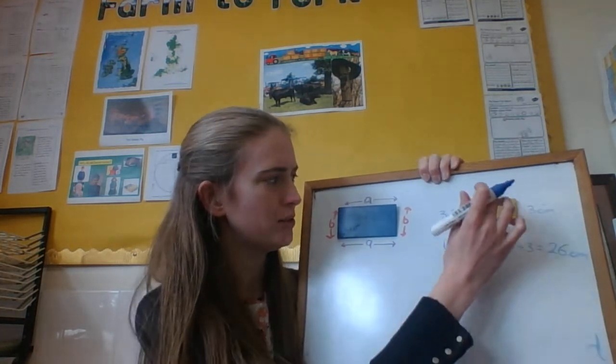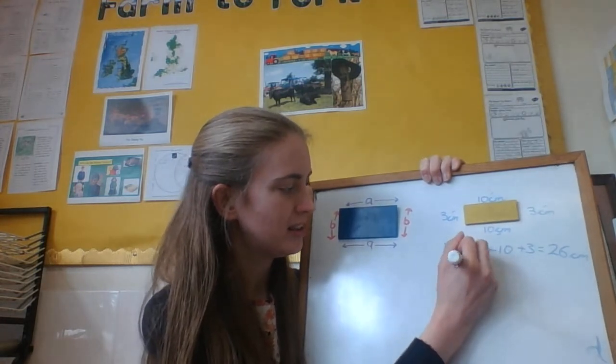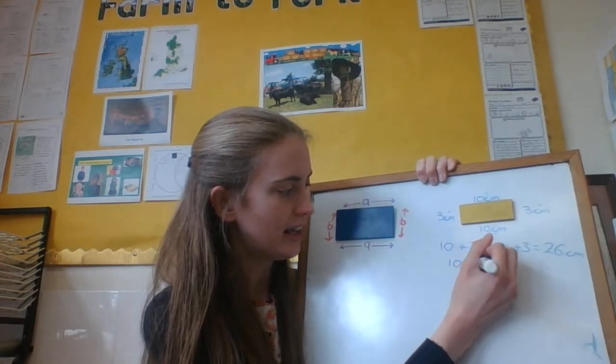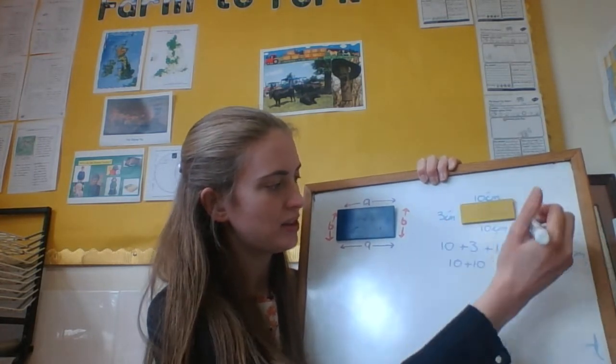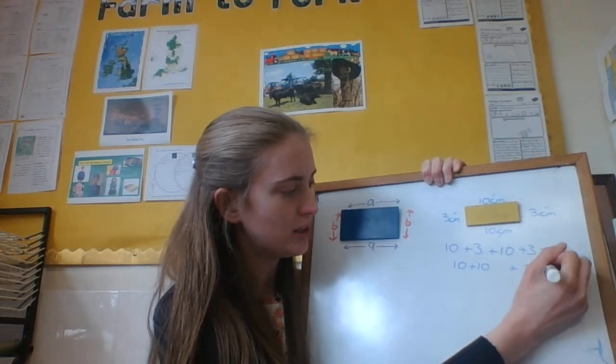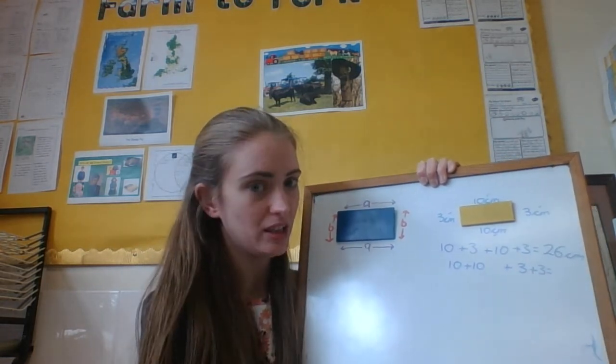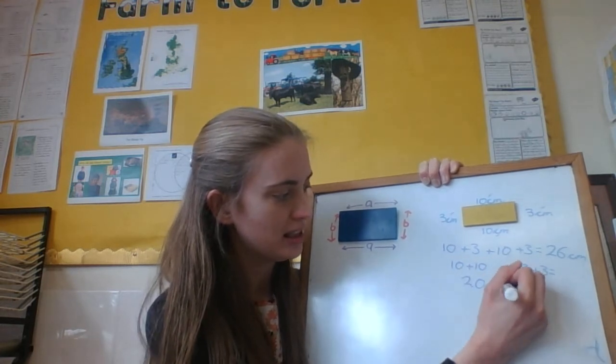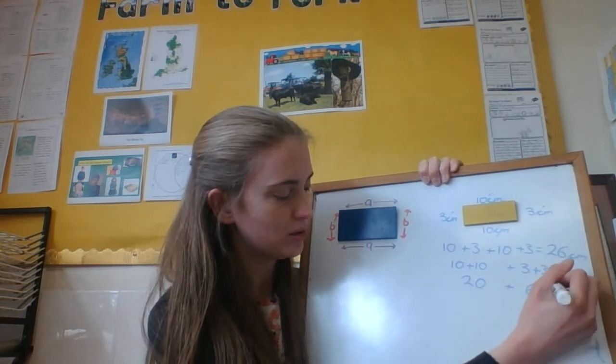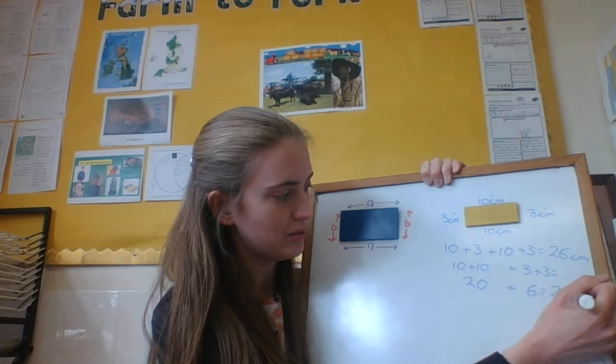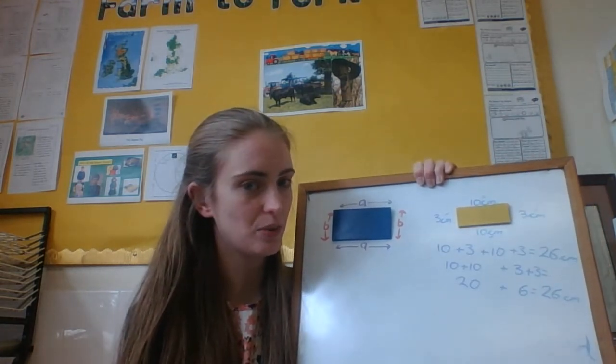So you can work out the perimeter of a rectangle by doing that. Now there is a faster way of doing that. Another way you can do it, go 10 and 10. So 10, add 10, add 3, add 3. And because we're all superstars at doubling, we know that that is 20, add 6, which equals 26 centimetres. It's just a slightly faster way of doing it.